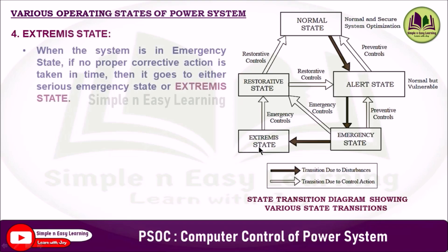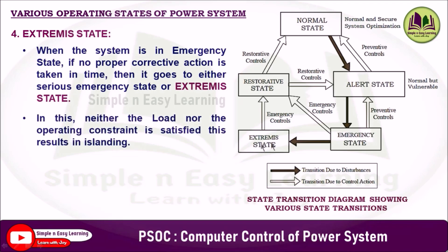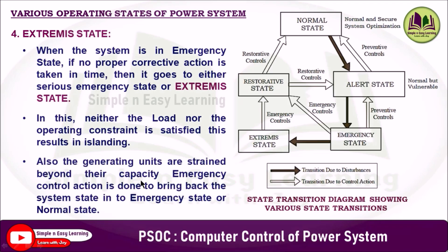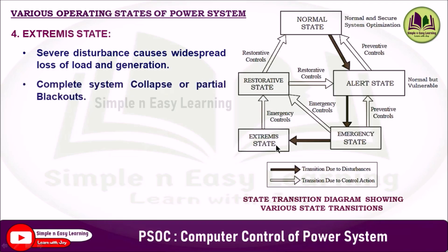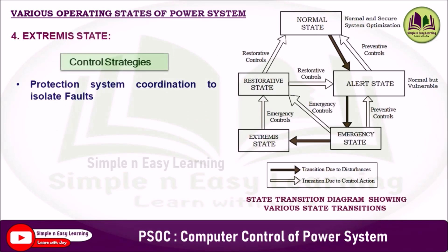The extremist state (also called serious emergency state) is entered when the system is in the emergency state and no proper corrective action is taken in time. In this state, neither the load nor the operating constraints are satisfied, resulting in islanding; generating units are strained beyond capacity. A severe disturbance causes widespread loss of load and generation, leading to complete system collapse or partial blackouts. This state is also called the blackout or collapse state. Emergency control action is taken to bring the system back through the restorative state.